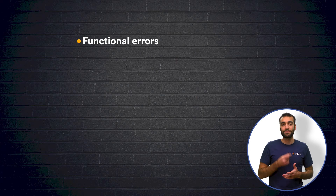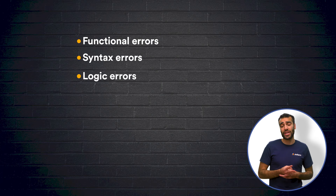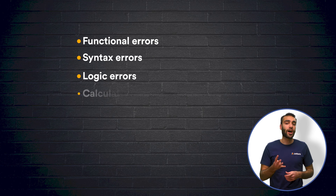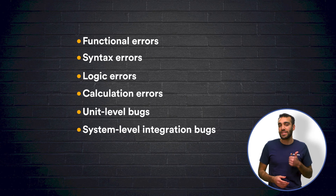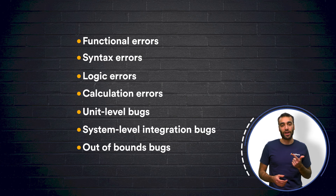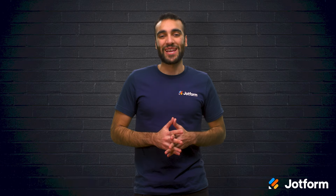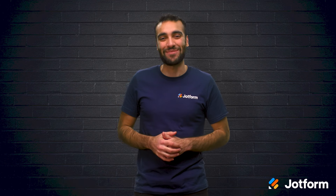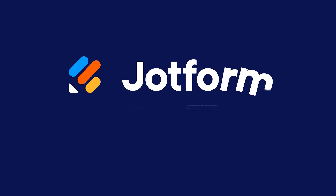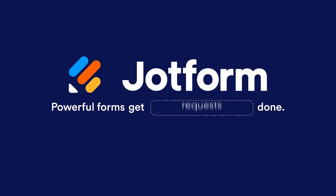Let's recap today's video. The common bugs and errors that you should expect to encounter during the software development process are: functional errors, syntax errors, logic errors, calculation errors, unit level bugs, system level integration bugs, and out-of-bounds bugs. Thanks for watching. I'm Raid from JotForm. I'll see you next time.